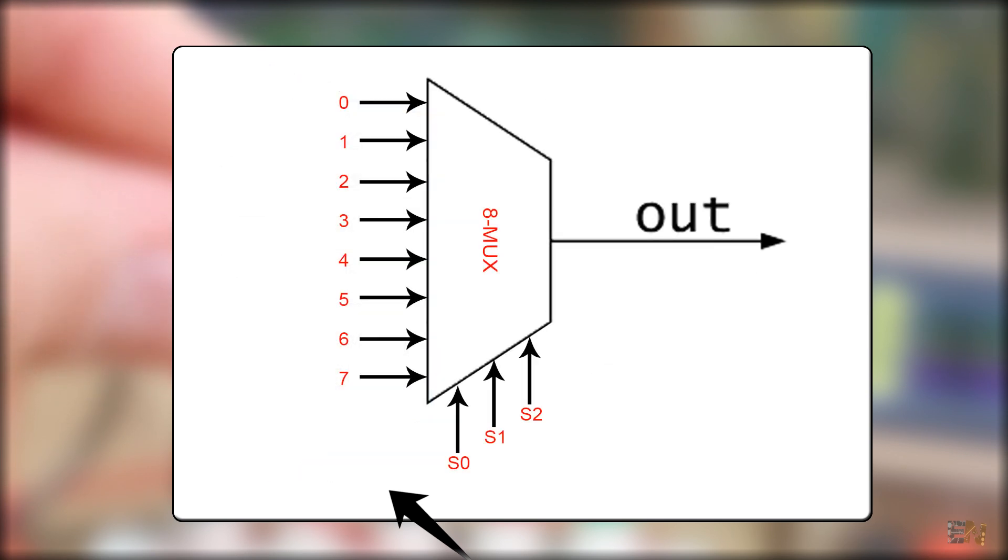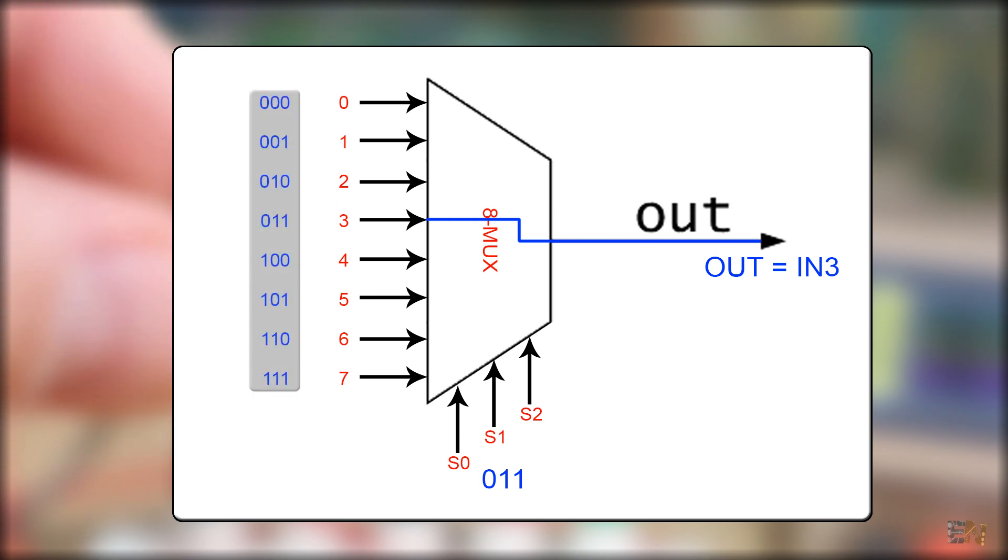Let's say that we have an 8 input MUX. We apply the binary input at the selector pins and by that we will have one of the 8 inputs at the output, whereas 001 is the first input, 010 the second, 011 the third and so on as in this table. So that easy, with only 3 signals, we can select any of the 8 inputs. This module is also very common in logic circuits.